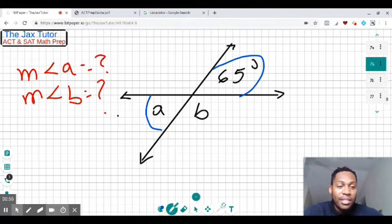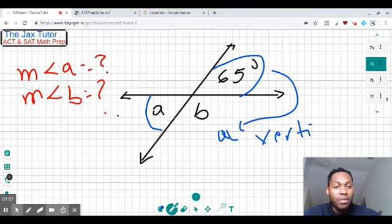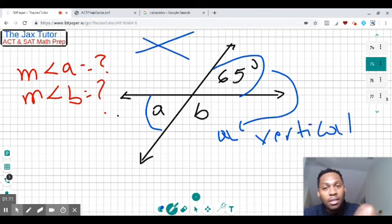Angle A—you can see the angle that's measured 65 is angle A, and this angle are vertical angles. So what it means by that is if you draw two lines, there's going to be two pairs of vertical angles.